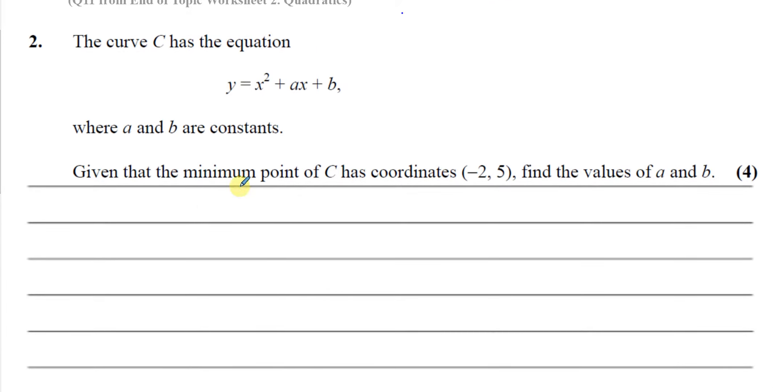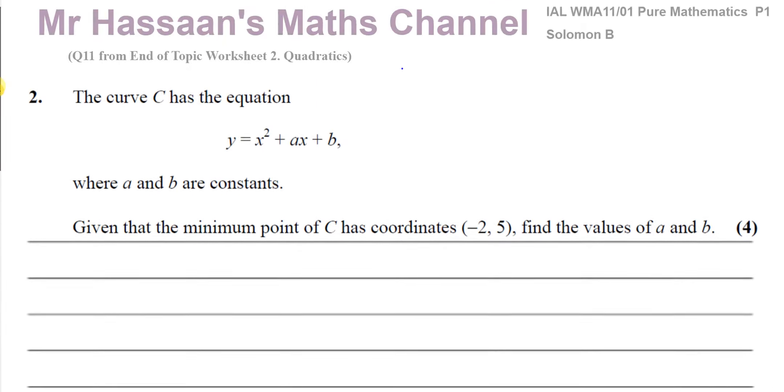So the minimum point is referring to the vertex of the curve. The vertex of the curve is minus 2, 5. If we complete the square, we'll end up with something that looks like this, a squared bracket. Inside the bracket, you're going to have the opposite of the x coordinate as a number here because the vertex occurs when this bracket becomes 0. And what's left on the outside is the y value of the vertex.